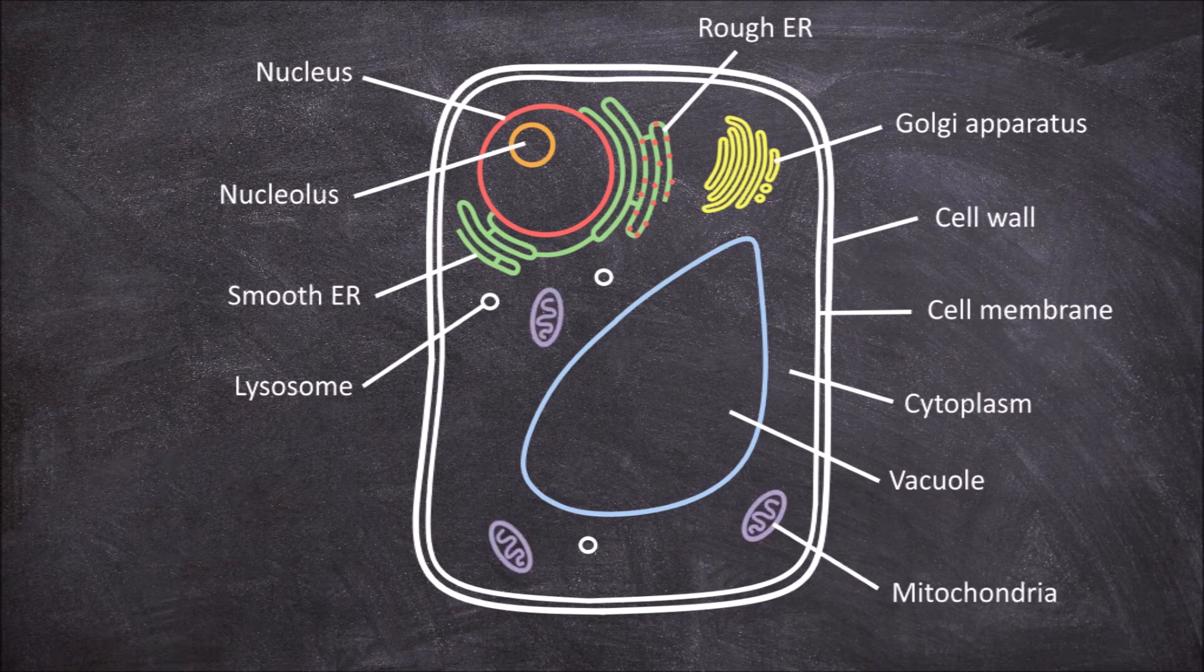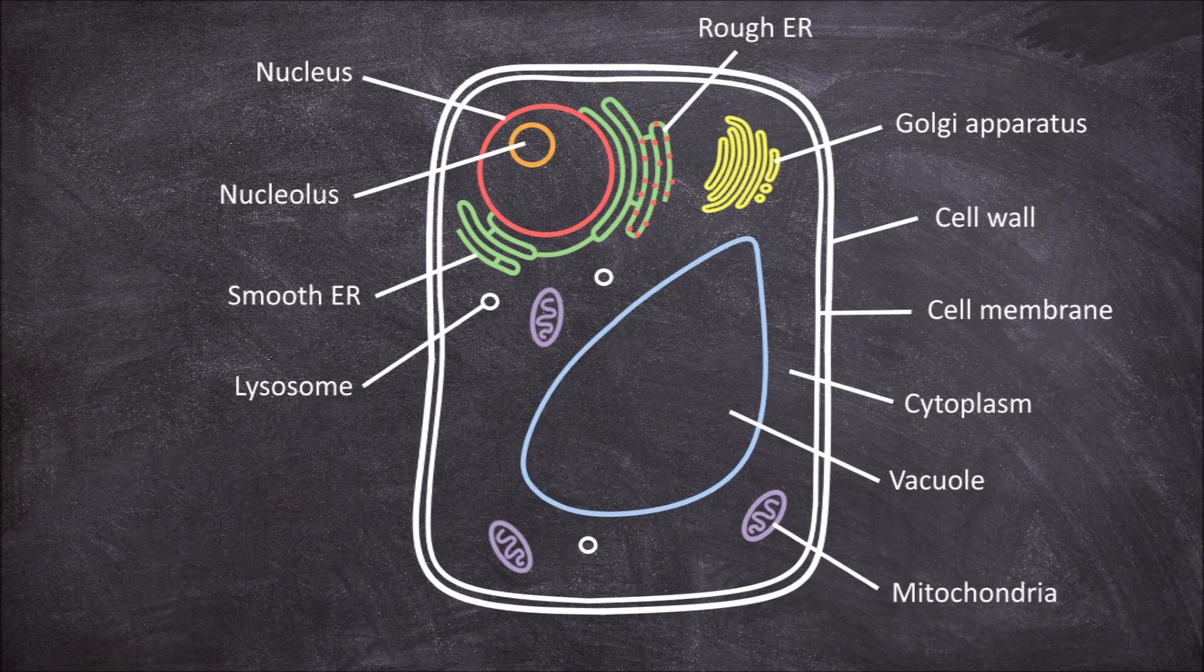The next organelle is the mitochondria. They function in the production of energy in the form of ATP within the cell.